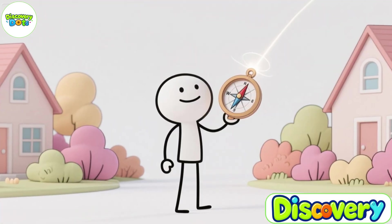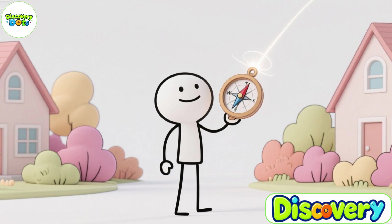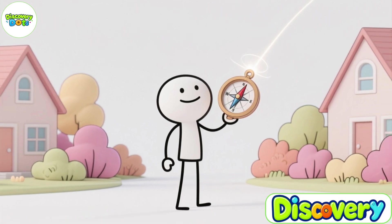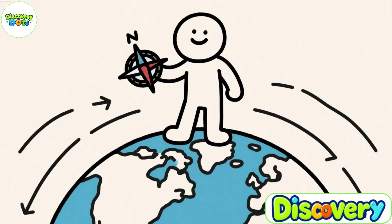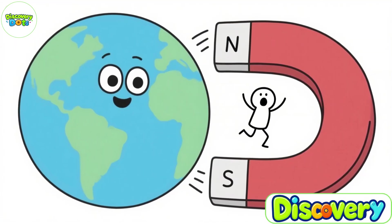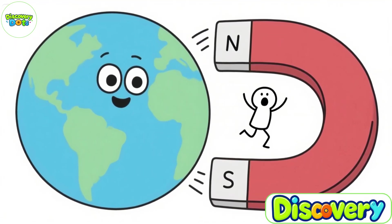So when we hold a compass, this tiny magnetic needle tries to align itself with the direction of a massive magnetic force acting upon it. And where does that magnetic force come from? It comes from the Earth itself.